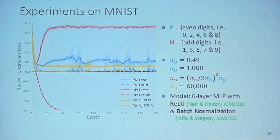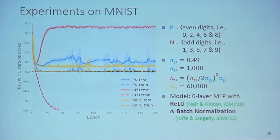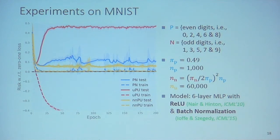On the MNIST dataset experiment, we want to separate even digits versus other digits. We give very few labeled data to supervised learning, especially negative data. PN learning and PU learning share the same number of positive data, and for unlabeled data we use all remaining data. The model is a six-layer multi-layer perceptron with ReLU activation and batch normalization. We can see that non-negative PU learning successfully fixes the problem of unbiased PU learning and even performs better than supervised learning when supervised learning has very few training data.